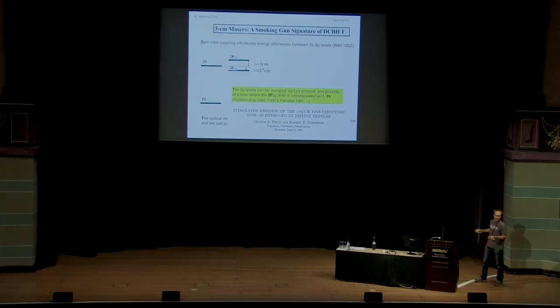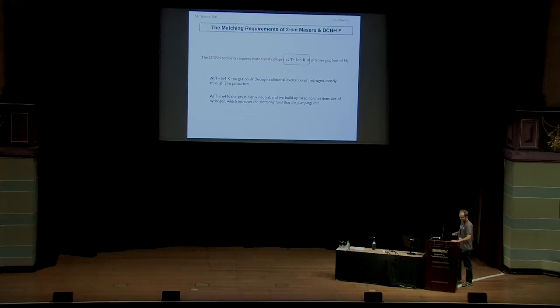Now this is something that has been known for, well, 60 years, 55 years. This is a paper by George Field and Partridge in 1961, where they were looking actually at this effect in nearby H2 regions. The reason we don't see this effect there is that Lyman-Alpha doesn't scatter nearly as frequently as it should to work. However, for direct collapse, it may be completely different. So I'll just list some of the conditions. You have isothermal collapse at 10 to the 4 Kelvin, pristine gas, free of H2. These are the main conditions for direct collapse. 10 to the 4 Kelvin, you produce Lyman-Alpha through collisional excitation.